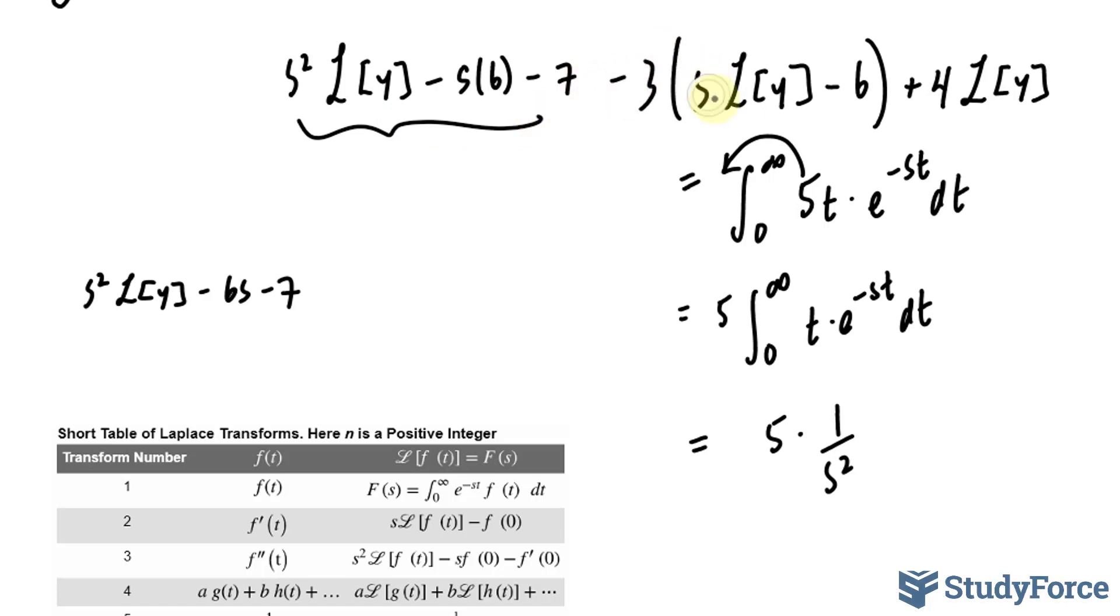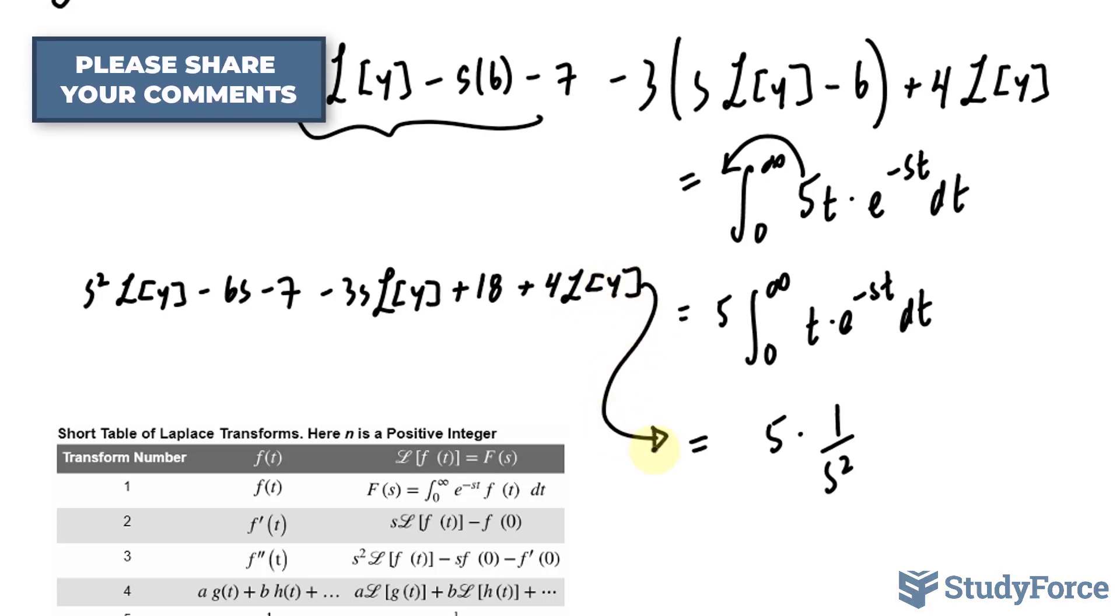I'm going to multiply -3 into these terms, so we have -3s times the Laplace transform of y plus 18. Then we have +4 times the Laplace transform of y equals the right side.